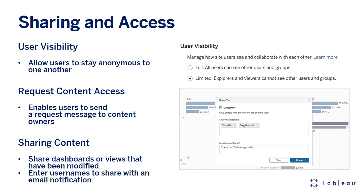19.4 has seen some major improvements to sharing and access, and first up is user visibility. This new site mode blocks user-to-user visibility within a site for explorers and viewers, so that users from different organizations remain anonymous to one another. Creators and administrators still see other users to help manage groups, permissions, and content in the site. The request access feature enables users to send a request message to content owners if they don't have permission to see a project, workbook, or view.